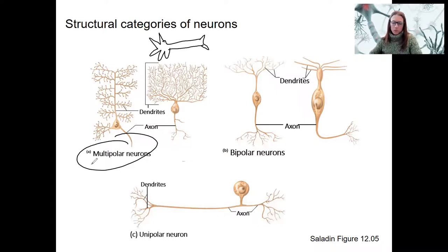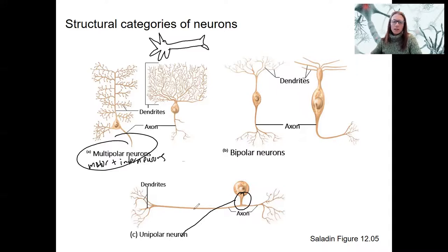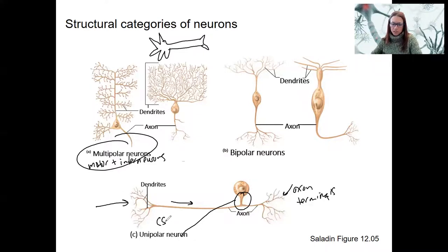Multipolar neurons are all motor and interneurons. Then we've got unipolar neurons — this means there's one process coming from the cell body. That's what uni means versus multi. In this case, the dendrites are receiving information and carrying it this way, and these are going to be our axon terminals. So a little bit different structure. These are sensory neurons — a mechanical stimulus would contact these dendrites.